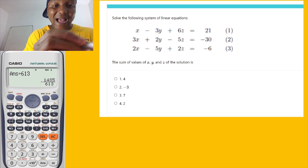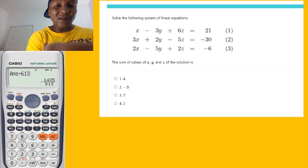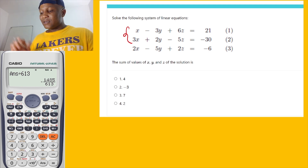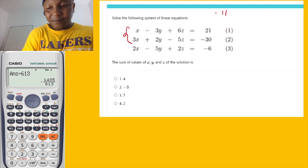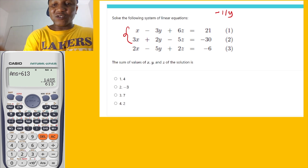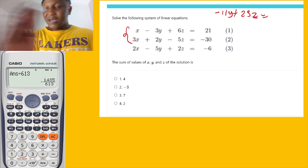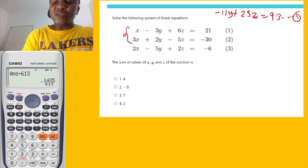I remember what I did, so I'll write it to the side to save time. We got: negative 11y plus 23z equals 93. Let's call that our first simplified equation. We're going to do the same process again.